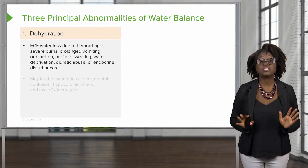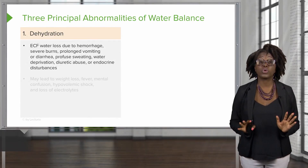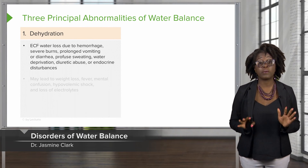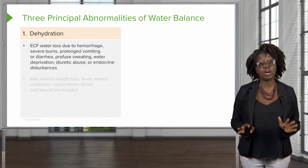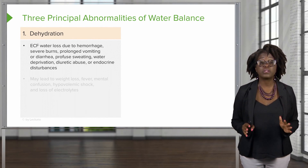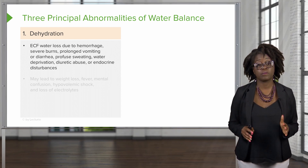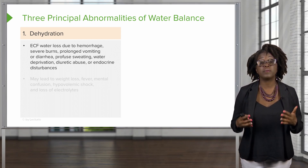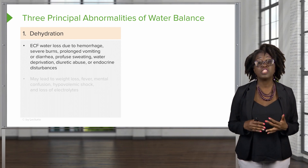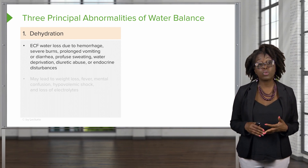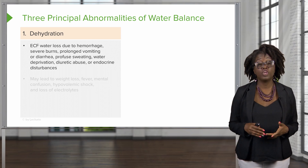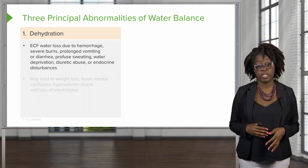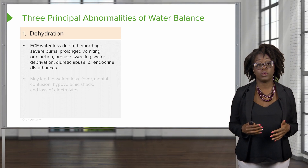Let's look at disorders of water balance. There are three principal abnormalities of water balance. The first is dehydration. Extracellular fluid water loss can be due to things like hemorrhage, severe burns, prolonged vomiting or diarrhea, profuse sweating, water deprivation, diuretic abuse, or endocrine disturbances.